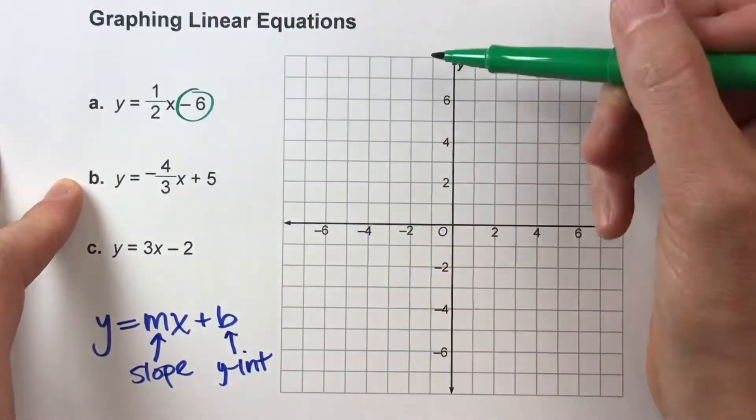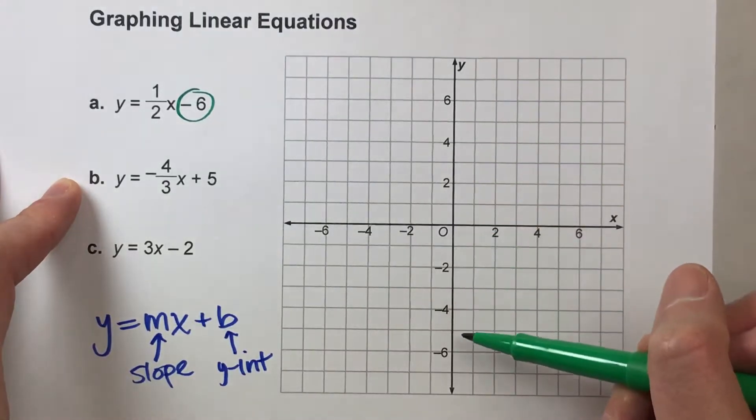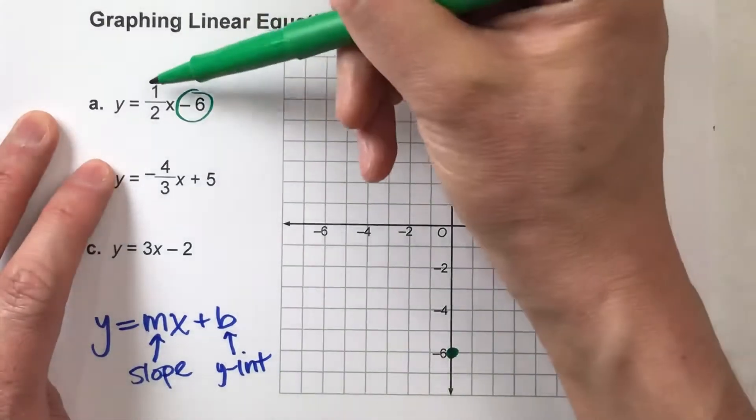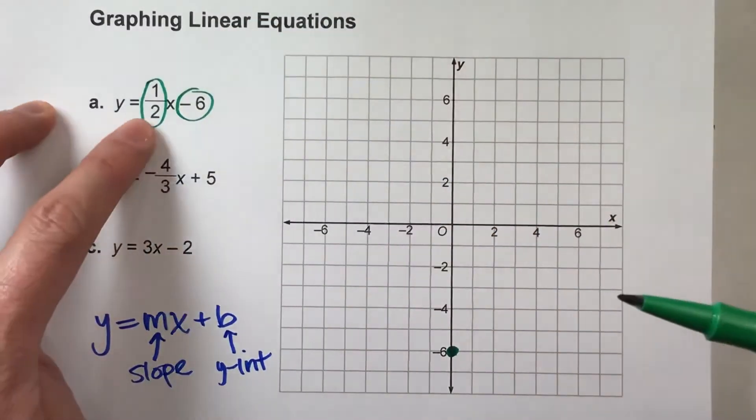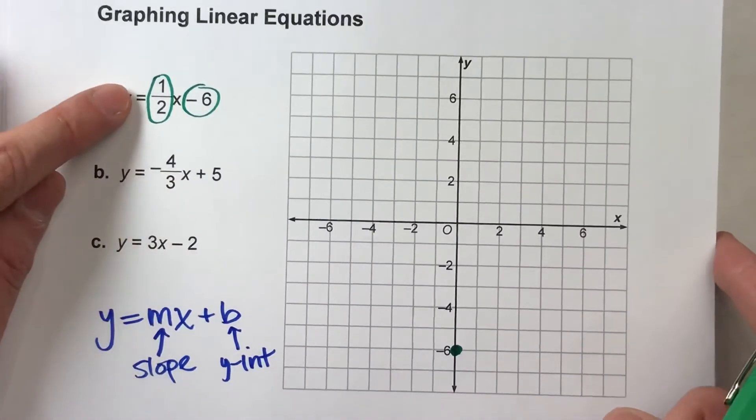That tells us our line is going to cross the y-axis at negative 6. So on the y-axis, I'm going to plot a point at negative 6. Now, the number next to the x is 1 half, and that's my slope.